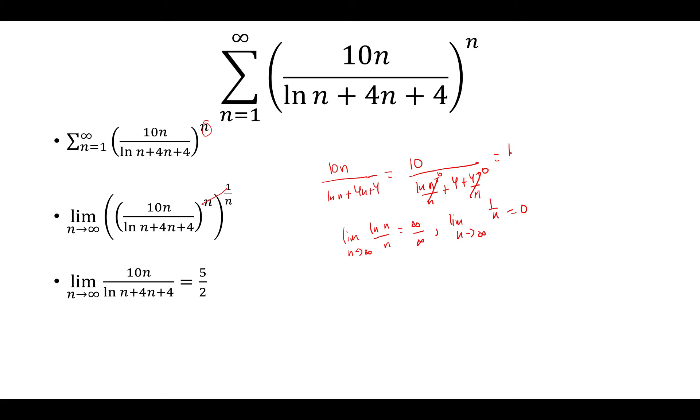So we have 10 over 4, which is equal to 5 halves. And because the limit is greater than 1, the series diverges by the root test.